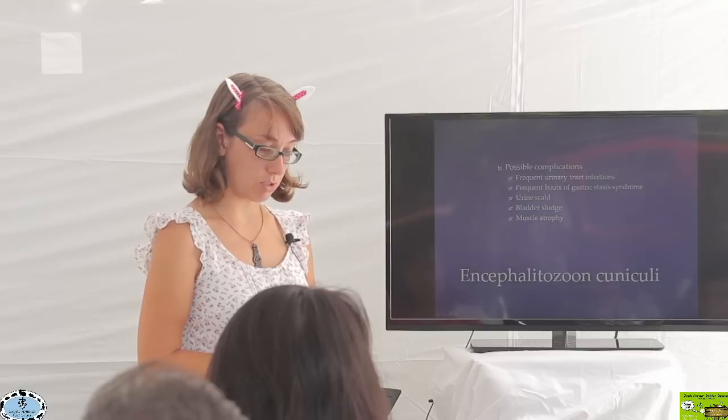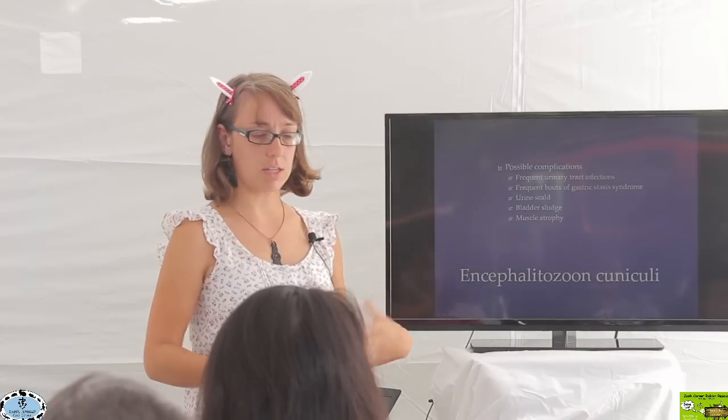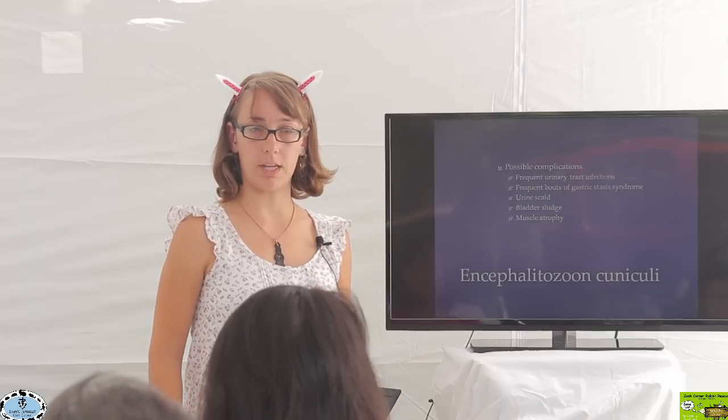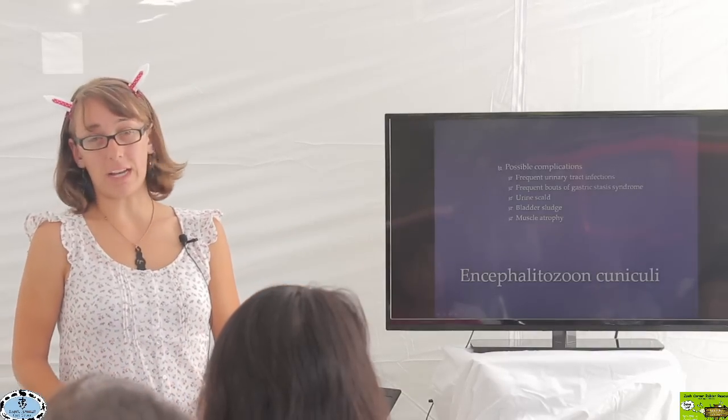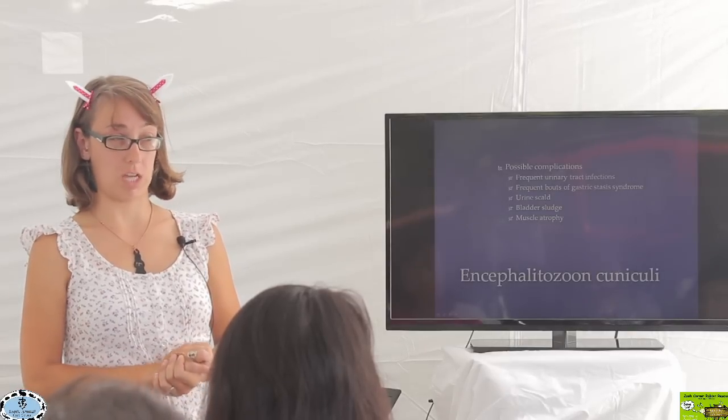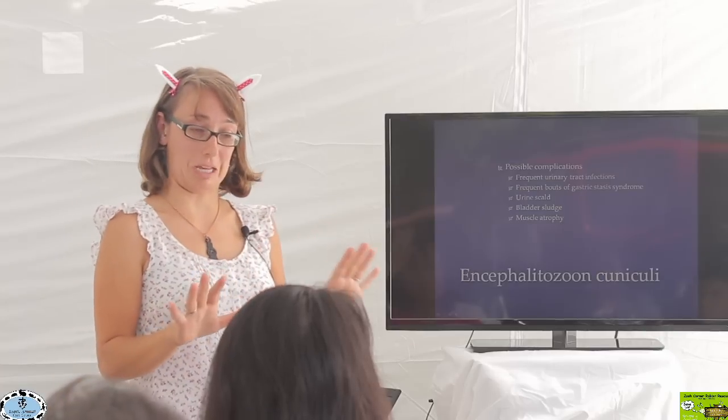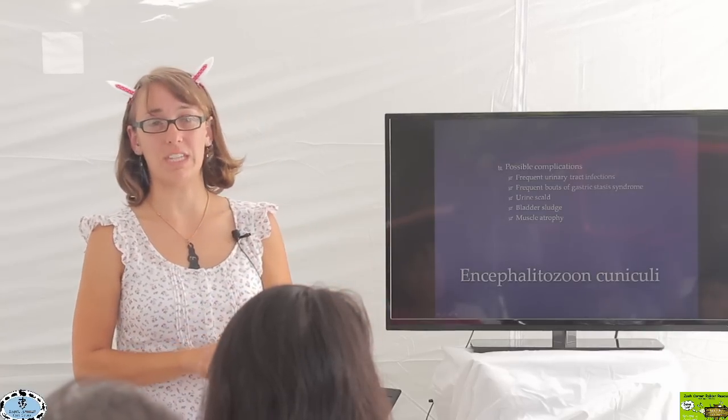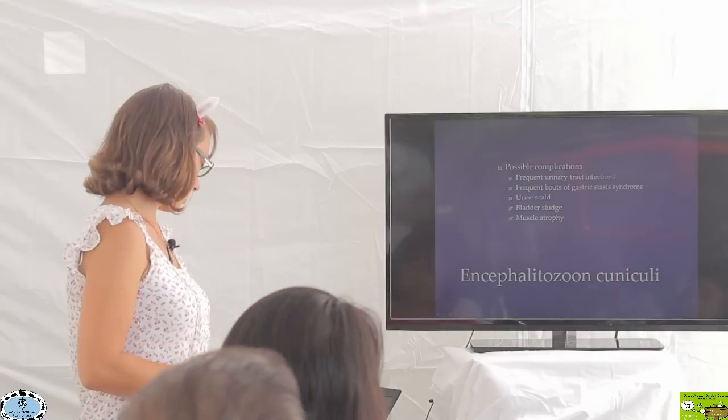Other things we see include urine scald from E. cuniculi. Because they're not able to move around as well with hind end weakness and have issues emptying their bladder, they may urinate on themselves and not be able to get away from it very well. Rabbit skin is extremely delicate. Compared to any other animal skin I've ever touched, rabbit skin is the most delicate, so it's very easy for them to get urine scald. Lastly, muscle atrophy. Since those hind limb muscles aren't being used as much, the muscles will waste a little bit. They'll be a lot more thin in those muscles in the back.